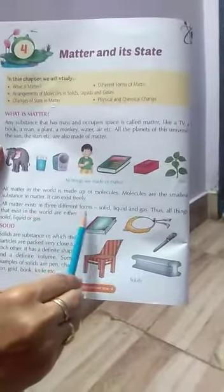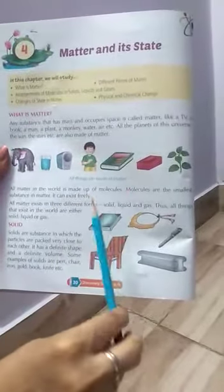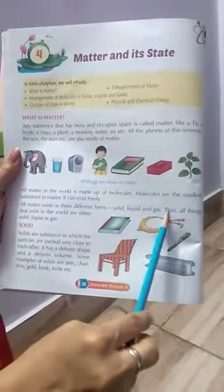All matter exists in three different forms. These are solid, liquid, and gas. Thus, all the things that exist in the world are either solid, liquid, or gas.